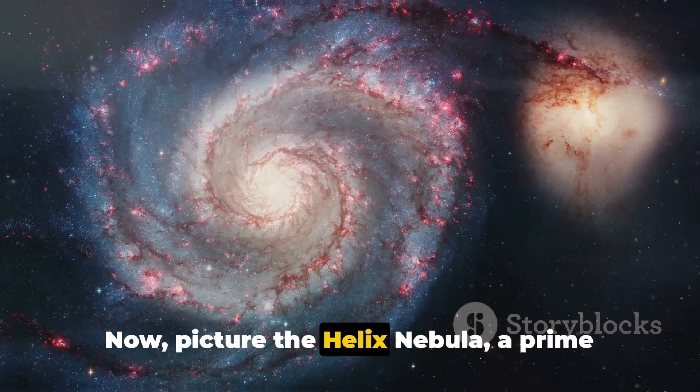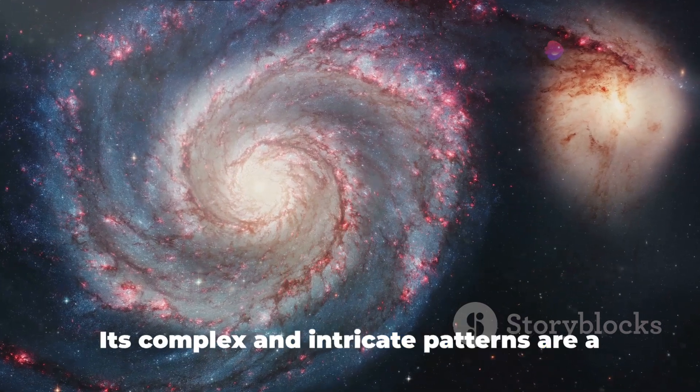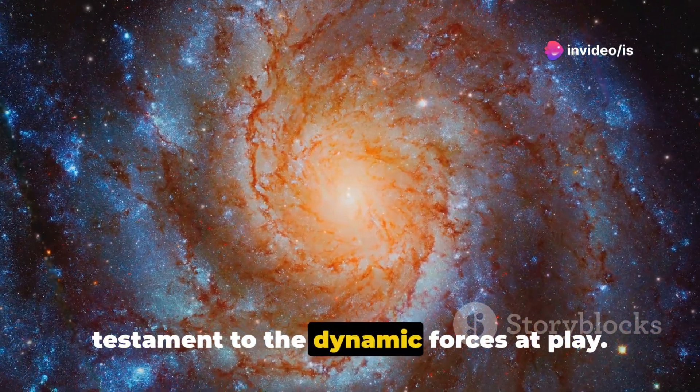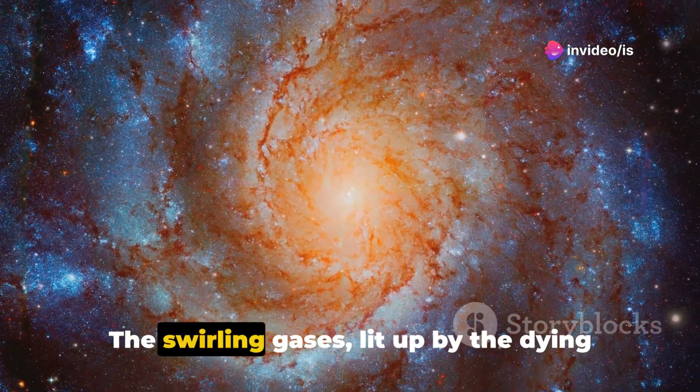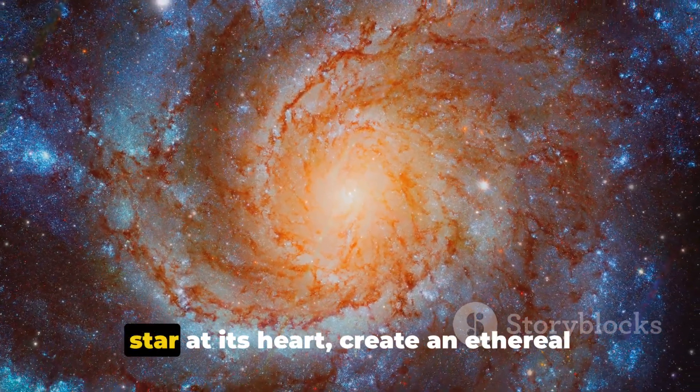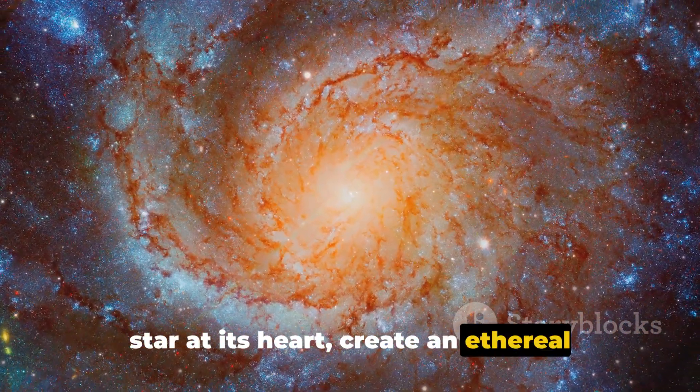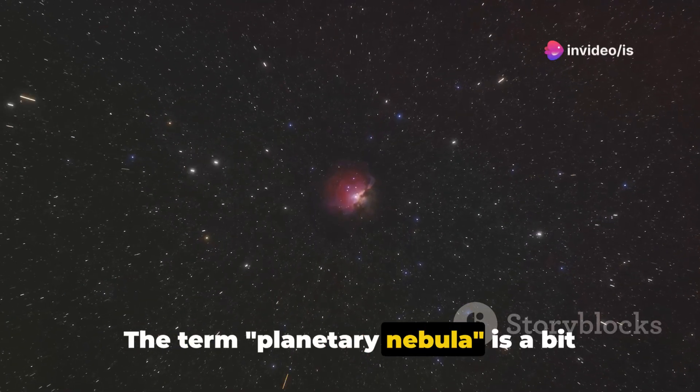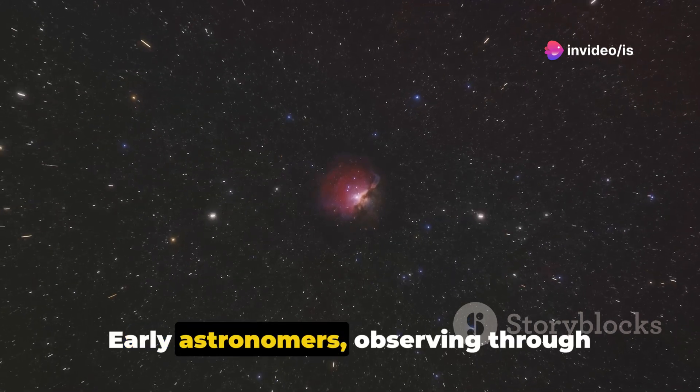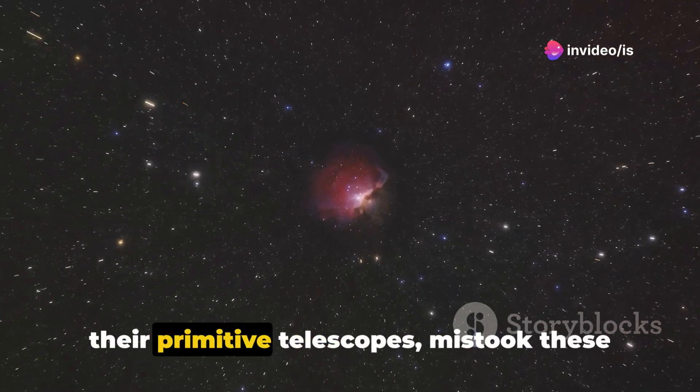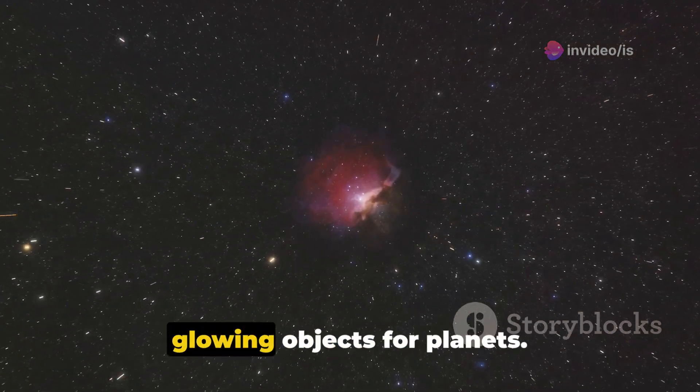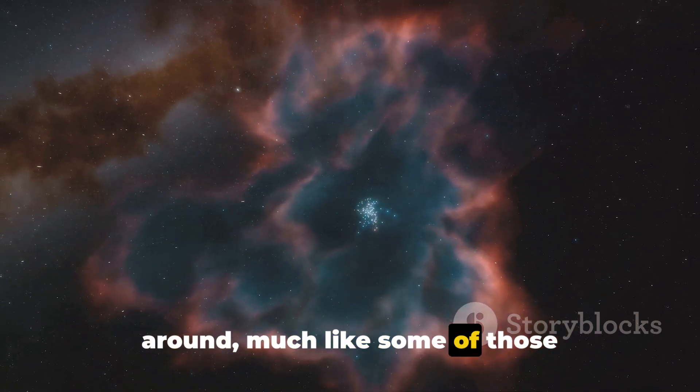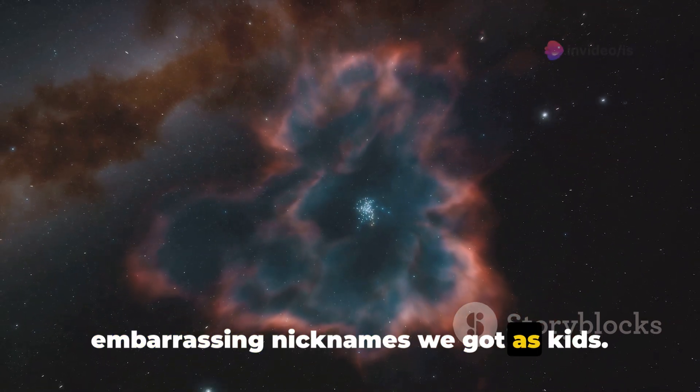Now picture the Helix Nebula, a prime example of a planetary nebula. Its complex and intricate patterns are a testament to the dynamic forces at play. The swirling gases, lit up by the dying star at its heart, create an ethereal cosmic eye that gazes out into the universe. The term planetary nebula is a bit misleading, though. Early astronomers observing through their primitive telescopes mistook these glowing objects for planets. Despite the error, the name has stuck around, much like some of those embarrassing nicknames we got as kids.